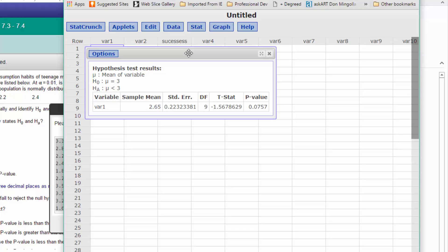And we've got a p-value of 0.076, which is greater than our alpha of 0.01. And since it's greater than, that means we failed to reject the null hypothesis. Hope this helps. Thanks for joining us.